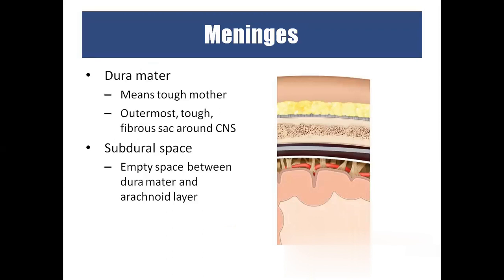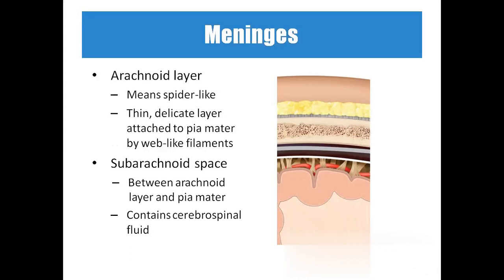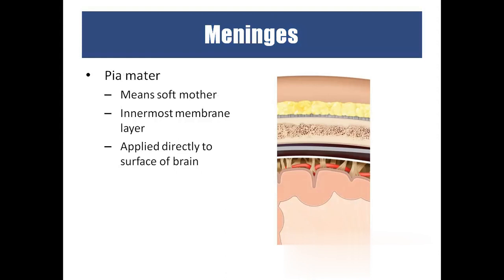The dura mater is very tough and is the outermost layer; the subdural space is the space below it. The arachnoid mater looks like a spider web, and below it is the sub-arachnoid space, which contains cerebrospinal fluid. The pia mater is very soft and delicate, and directly attaches to the brain.